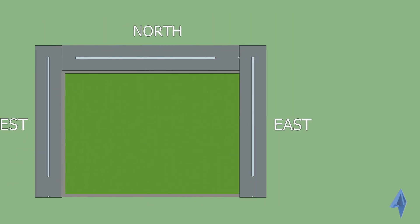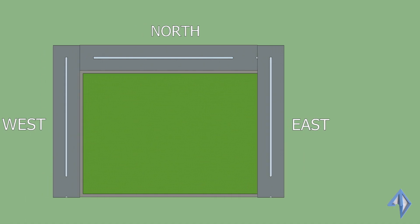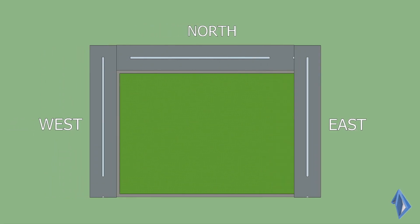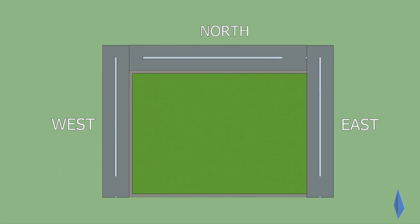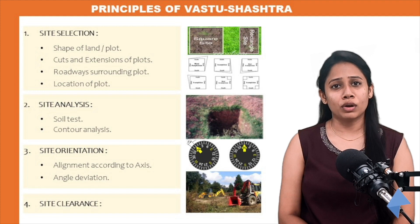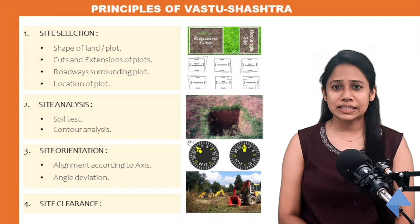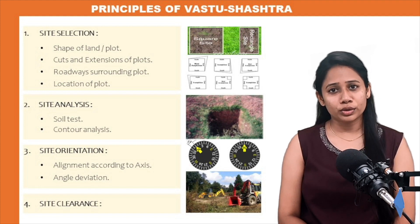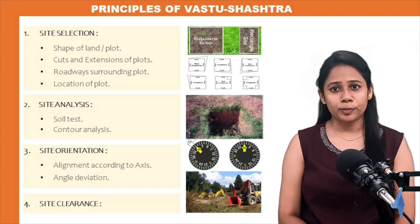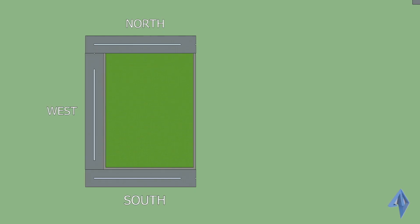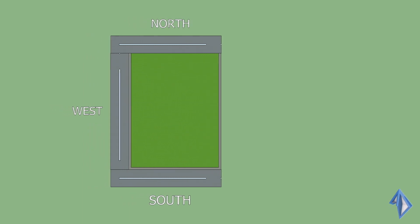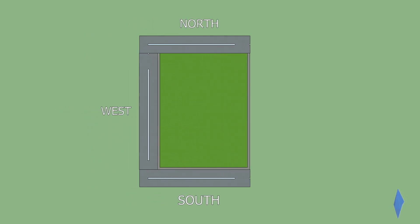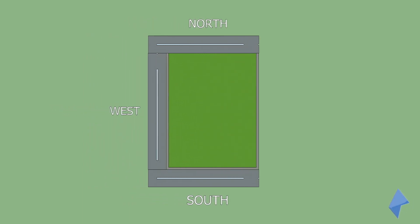If you have a roadway from north, west and east direction, it's a good plot. If you have a roadway on north, south and east direction, it's also a good kind of land. If you have a roadway on north, west and south direction, it's a good kind of land.